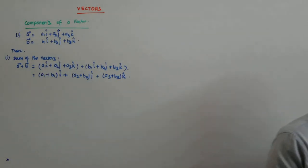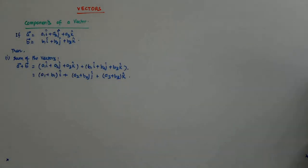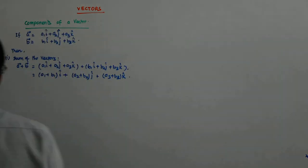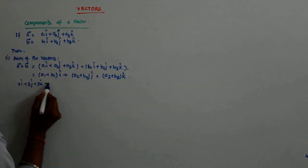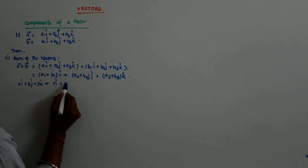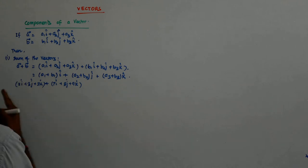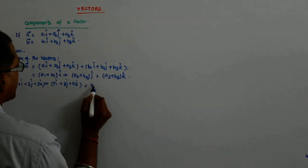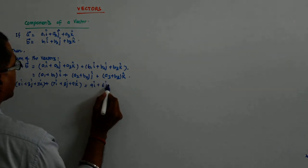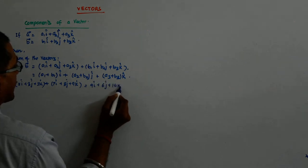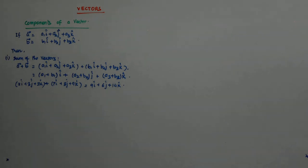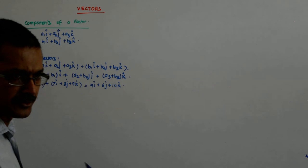So, this is how you add two vectors, a and b. If I am given maybe 2 i cap plus 3 j cap plus 5 k cap and you have to add 7 i cap plus 3 j cap plus 9 k cap, what do we do? You straight away start adding their respective coefficients. So, that is 9 i cap plus 6 j cap plus 14 k cap. That's how this becomes your vector.